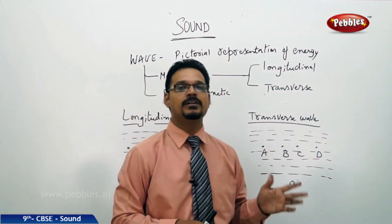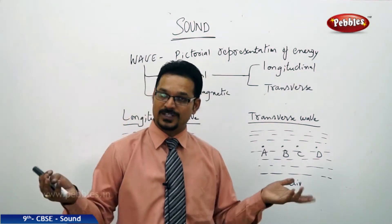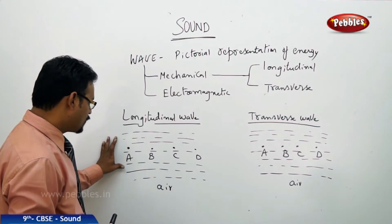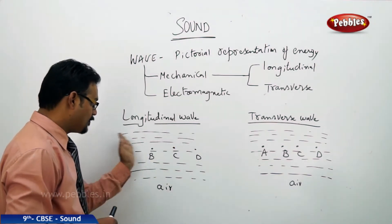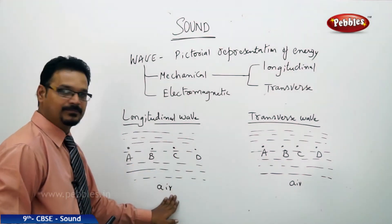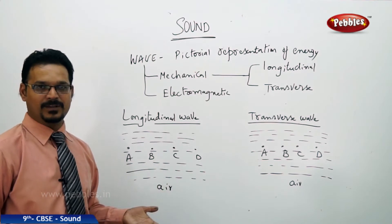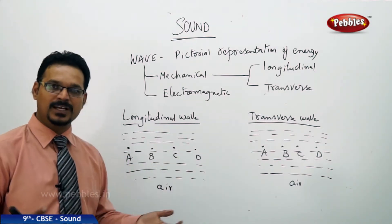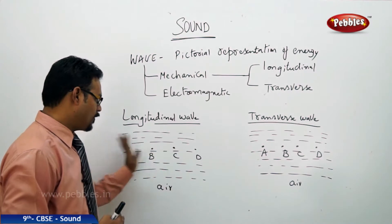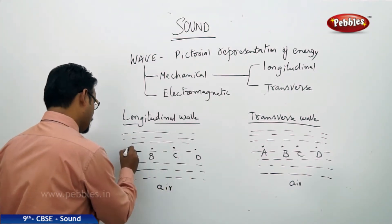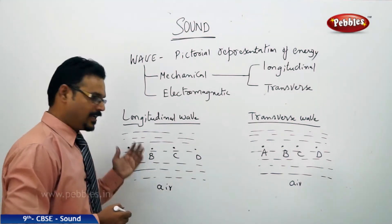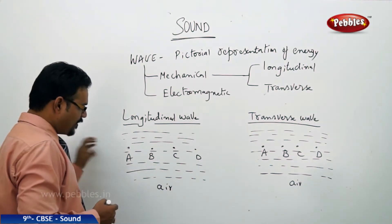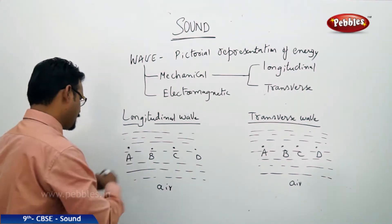Now the question is: what is longitudinal and what is transverse? For a longitudinal wave, if you see on the board I have drawn some dots and lines — think that this line is the air medium. Air medium or any gaseous medium can be taken as an example. Air medium consists of many particles, because a medium is nothing but particles. I have chosen four air particles: A, B, C, D.